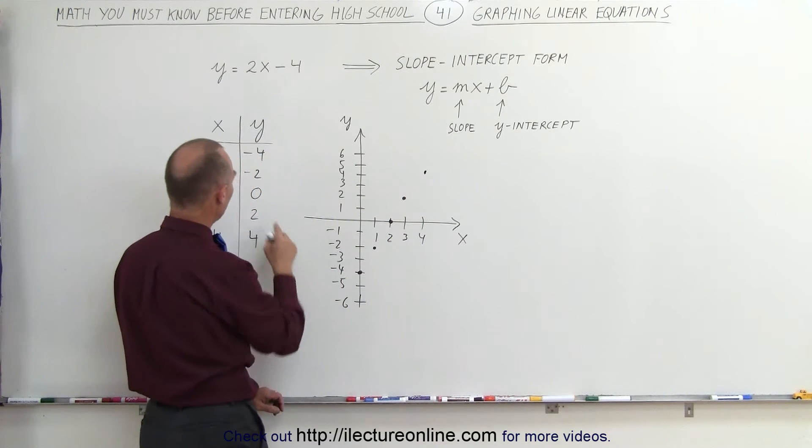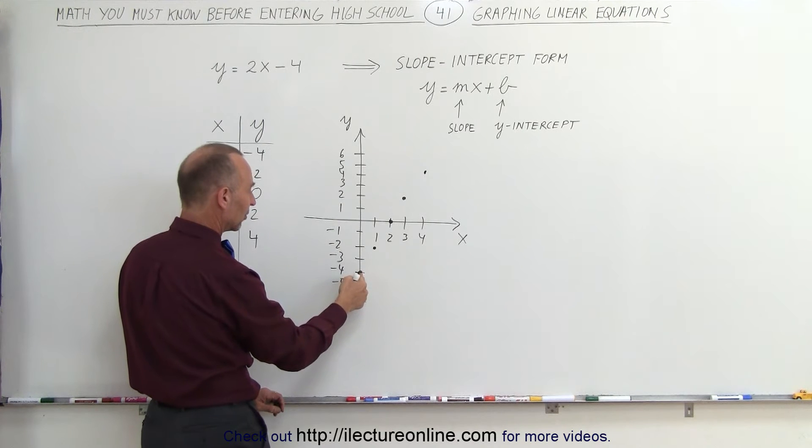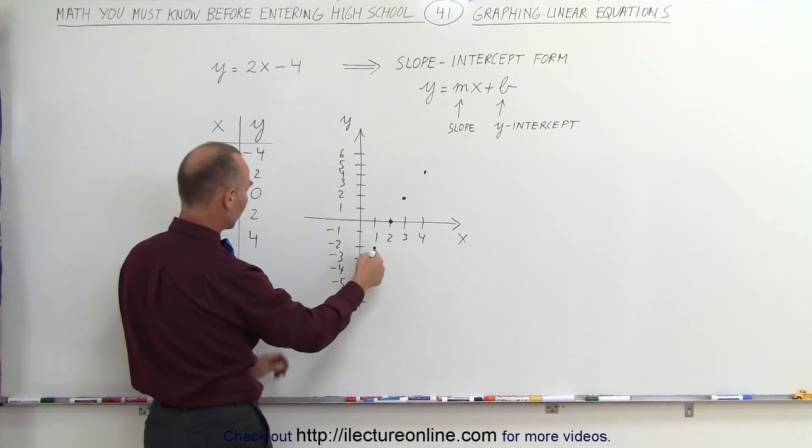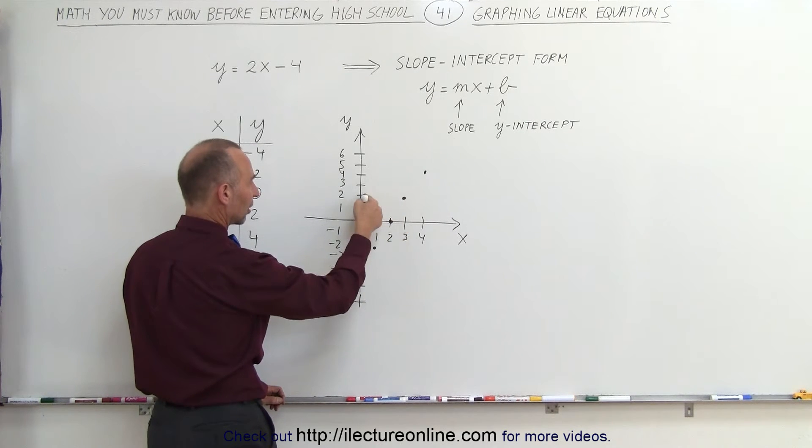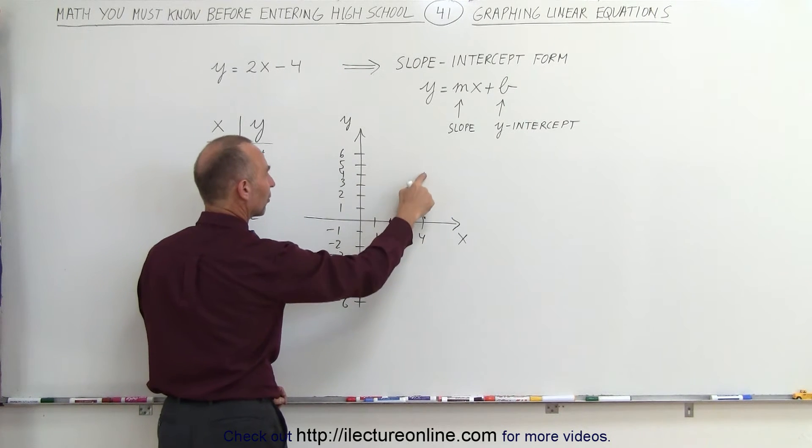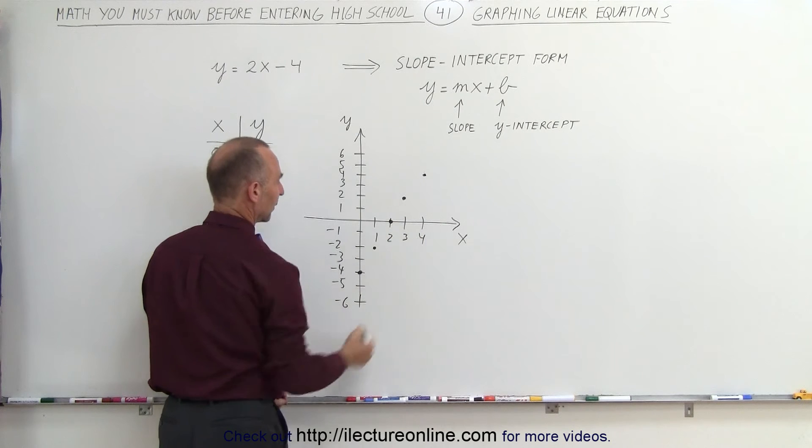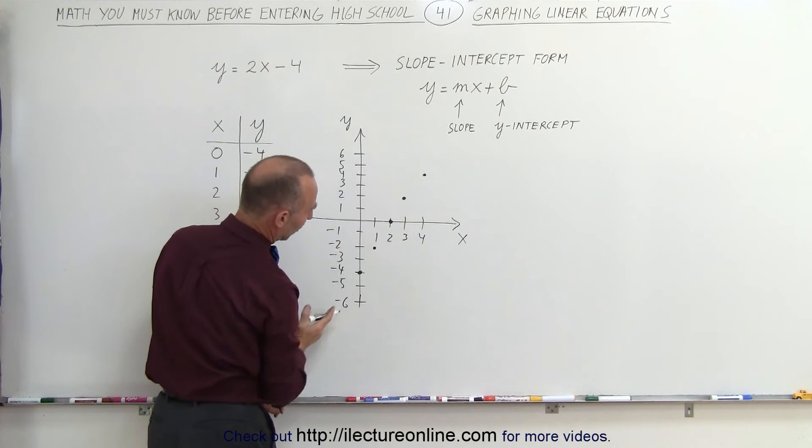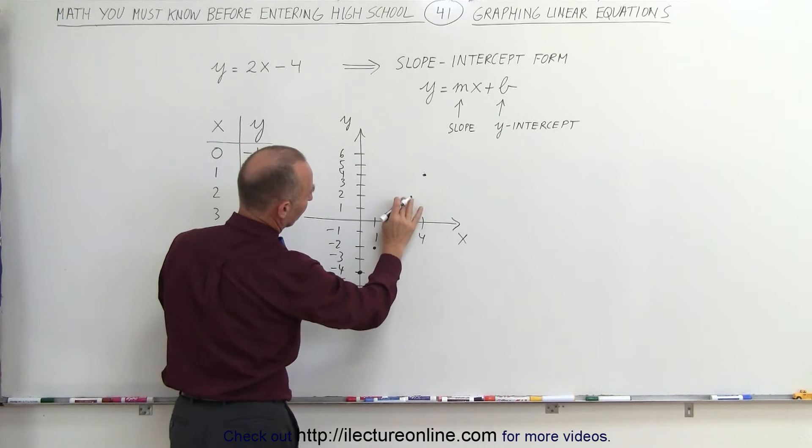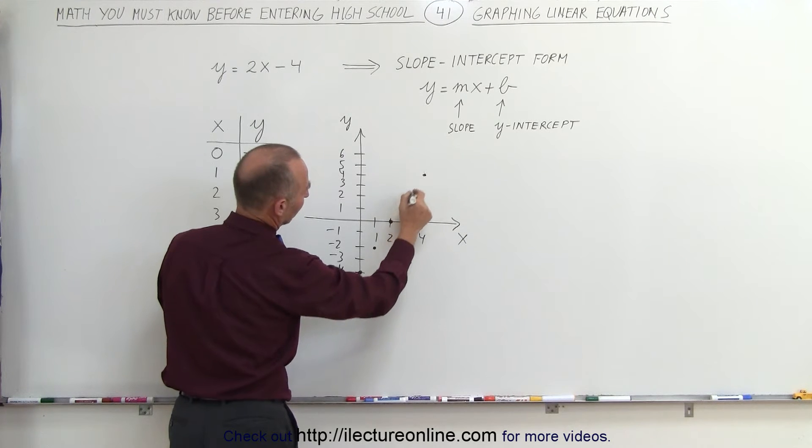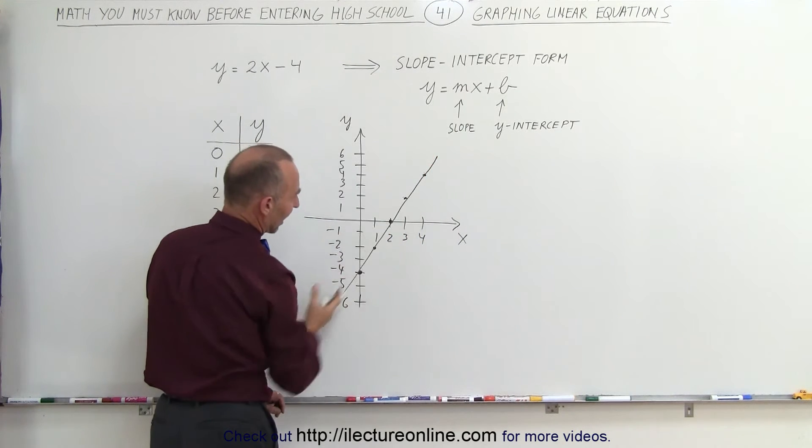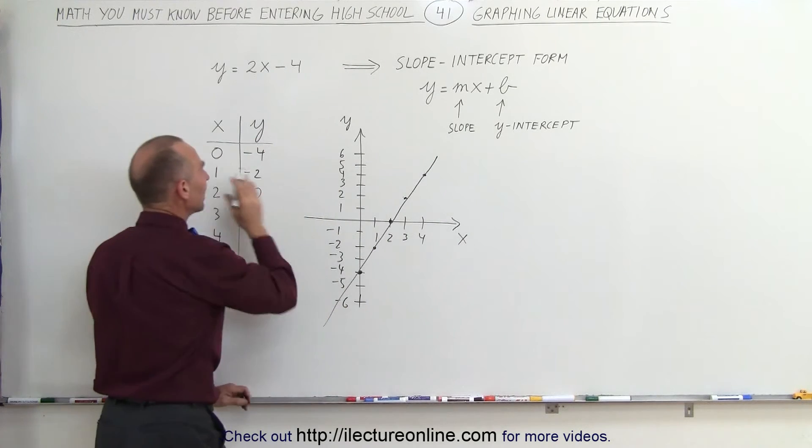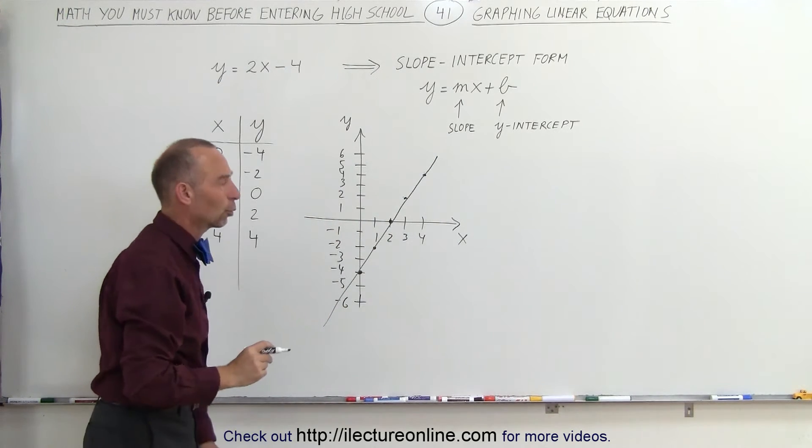Again, the way you find the points: plug in 0 for x and go down to y equals negative 4. Plug in 1 for x you get negative 2. Plug in 2 for x you get 0. 3 for x you get 2. 4 for x you get 4. You can see that all those points are in a straight line, and you can connect all those points with a line. This line represents the relationship between x and y in this particular equation.